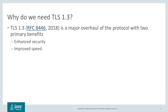TLS 1.3 was about four years in the making. It was recently published in August 2018 as RFC 8446. TLS 1.3 is a major overhaul of the TLS protocol with two primary benefits: enhanced security and improved speed.